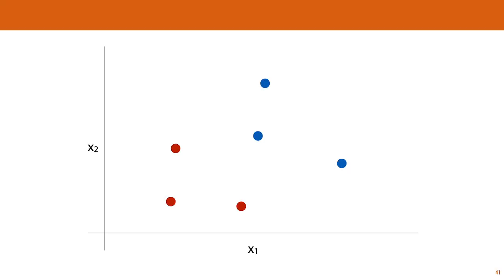Here is an extreme example of the problem. We have two linearly separable classes and a decision boundary that separates the data perfectly. And yet, if I see a new instance that is very similar to the rightmost red point, but with a slightly higher x1 value, it is suddenly classified as a blue point. This illustrates the intuition behind the support vector machine loss function.